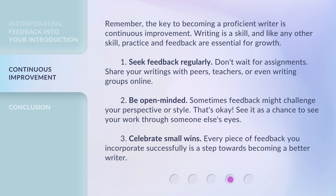Remember, the key to becoming a proficient writer is continuous improvement. Writing is a skill, and like any other skill, practice and feedback are essential for growth. First, seek feedback regularly — don't wait for assignments; share your writings with peers, teachers, or even writing groups online. Second, be open-minded. Sometimes feedback might challenge your perspective or style, and that's okay — see it as a chance to view your work through someone else's eyes. Third, celebrate small wins. Every piece of feedback you incorporate successfully is a step towards becoming a better writer.